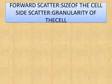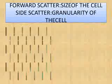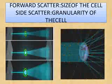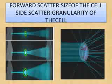Now let us see what forward scatter and side scatter mean. Notice you have a small cell, medium cell, and a larger cell. The size and forward scatter are going to be directly proportional. For a tiny cell, the amount of scatter will also be less. For a larger cell, the amount of scatter will be huge. So forward scatter has to do with the size of a cell.